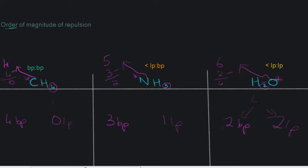What all of these molecules have in common is the total number of electron pairs, which in all cases is four.